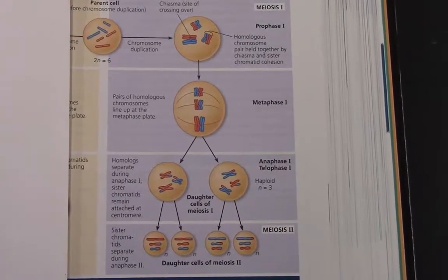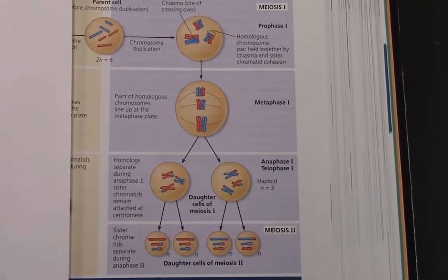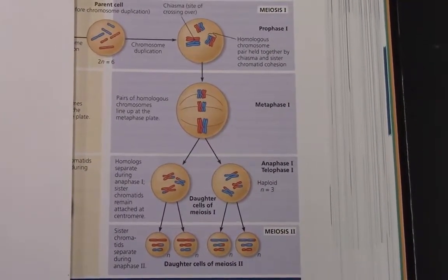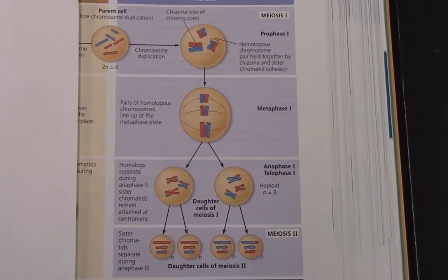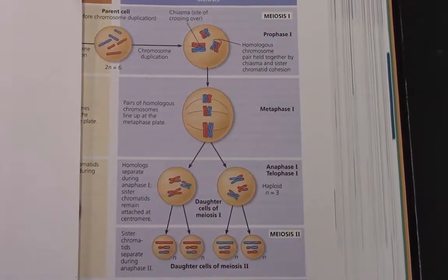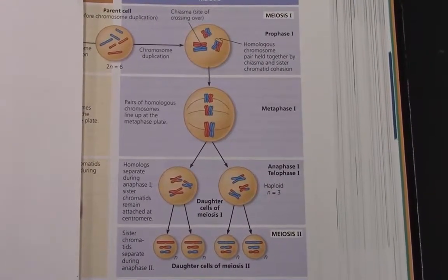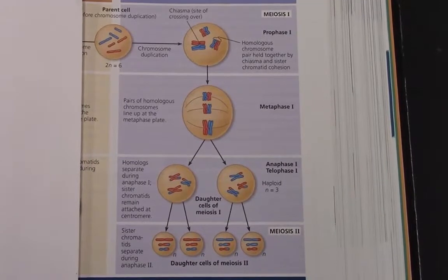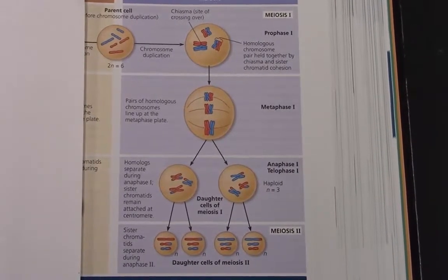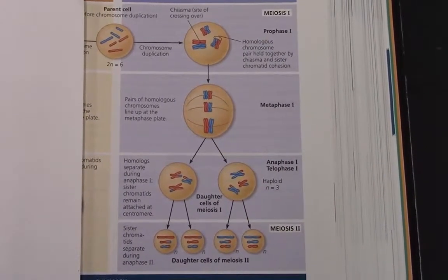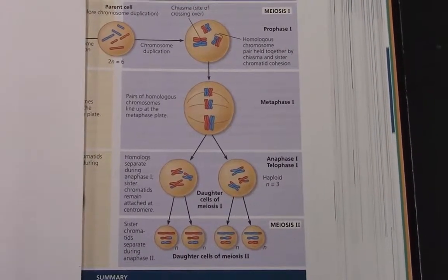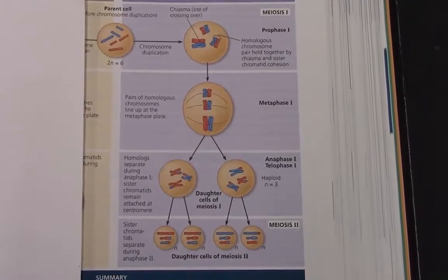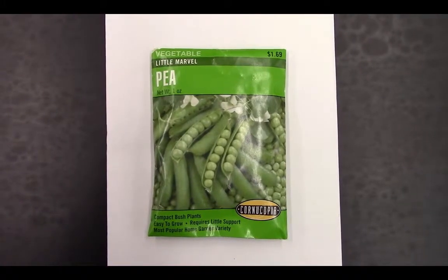These daughter cells at the end of meiosis II we call gametes. If they're small and produced by the male, we call them sperm cells; if they're larger and nutrient-rich and produced by the female, we call them egg cells. In fertilization they recombine to form a new individual with a unique set of DNA, different from all other individuals, and that individual has the correct amount of DNA for the organism.